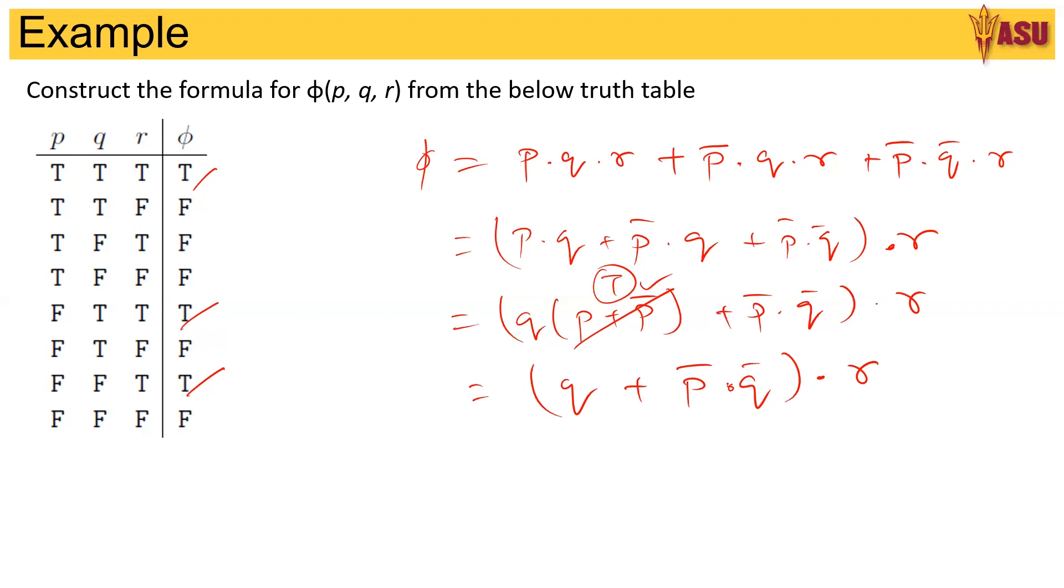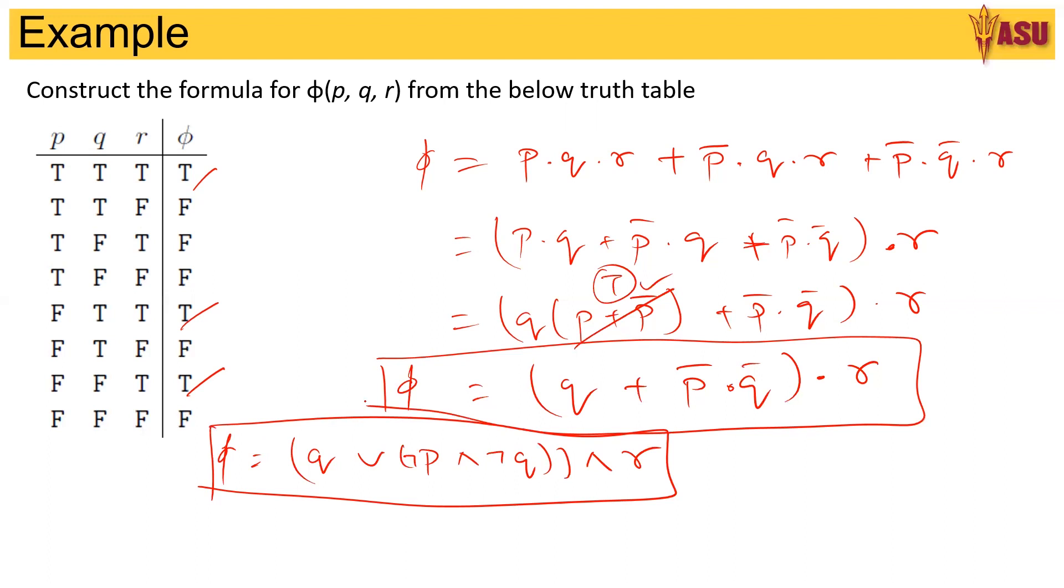Remember the dots represent and and the plus represents or. So we have q or not p and not q and r. So this is the representation of the formula. If you are looking at writing it with the logical operators then it is the same as saying q or not p and not q and r. So this is the formula or this is the formula. These are two ways of writing the formula.